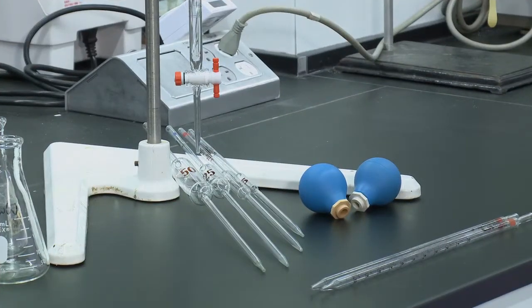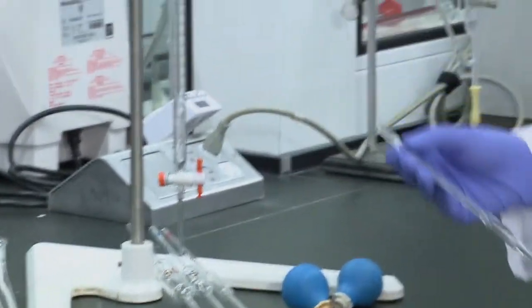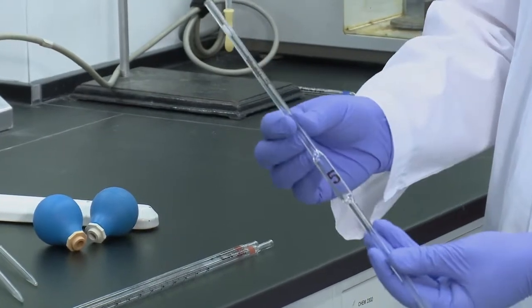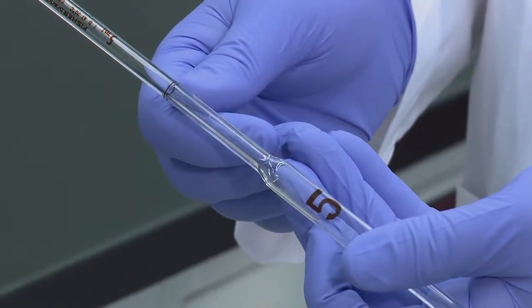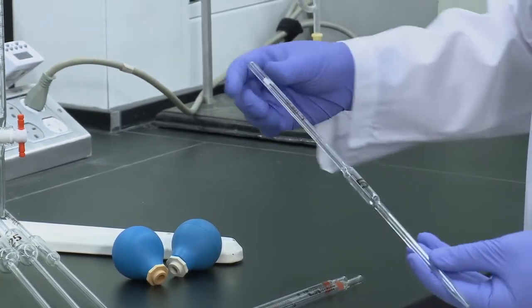There's several different ways we transfer accurate volumes in this lab. Most commonly you'll want to use your transfer pipettes which have the indicated volume on them and a single line like the volumetric flasks. These are the most accurate means you have to transfer volumes in this lab.